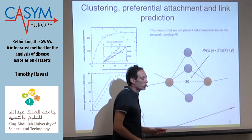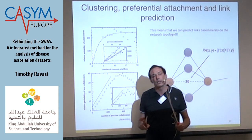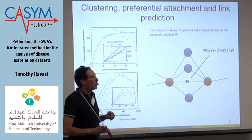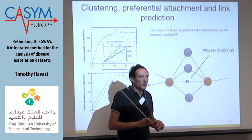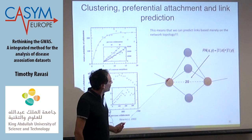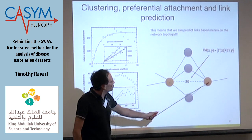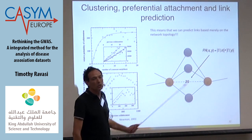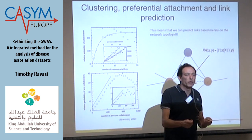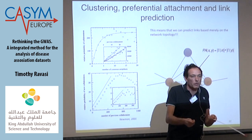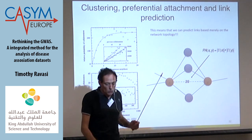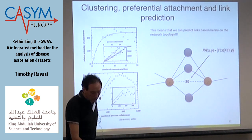Common neighbors and preferential attachment are the first two predictors developed for link prediction. Link prediction asks: how can we predict if these two genes, proteins, or SNPs interact together or have a function together in a particular biological context, such as cancer? That is a very important but simple problem.